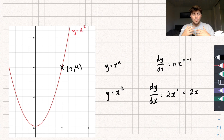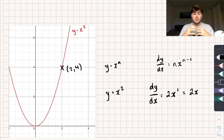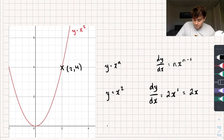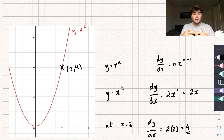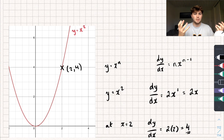Now if I want to find the gradient at the point x equals 2, I just substitute x equals 2 into my gradient function. So at x equals 2, dy by dx equals 2 multiplied by 2, which is 4. And so the gradient of y equals x squared at the point 2 is just 4. Pretty straightforward.